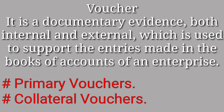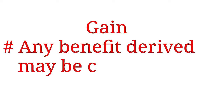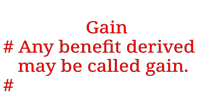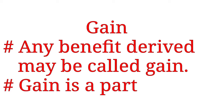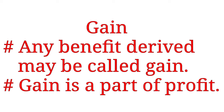On the basis of source of documents, vouchers can also be of two types: number one, internal vouchers, and number two, external vouchers. Number 24, Gain. Any benefit derived may be called gain. Normally, gain comes from a single transaction or a group of transactions. Gain differs from profit because profit refers to the ultimate excess of income over expenses relating to an accounting period, while gain refers to the benefit derived from a single transaction or a group of transactions. For example, if an asset costing Rs. 2,000 is exchanged with another asset costing Rs. 2,500, then there is a gain of Rs. 500.